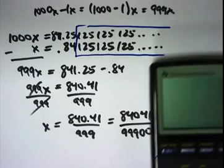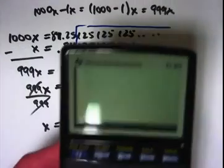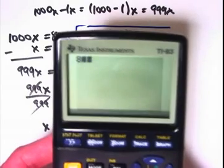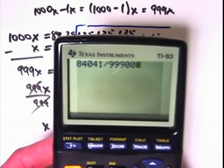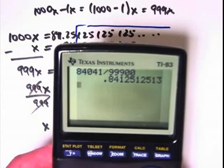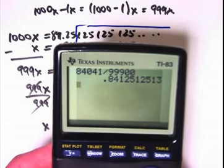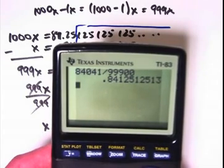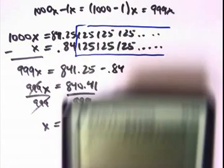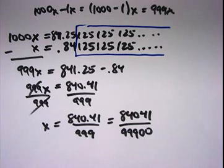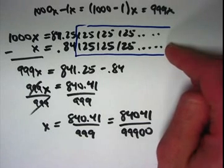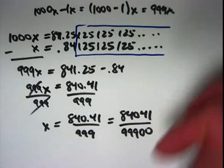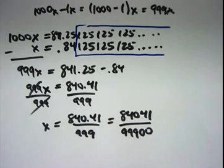We can check with the calculator that it seems to work. 84041 divided by 99900 is .84125125. The 3 is just a rounding up of the next 2 because the 5 that follows. It really is .84125 with a 125 repeating. So that's kind of interesting. Turns out you can use this method to show that anytime you have a repeating decimal, you're going to get some fraction where the numerator and denominator can be represented as integers. Therefore, any repeating decimal is really a rational number, which should beg a question in your mind perhaps.